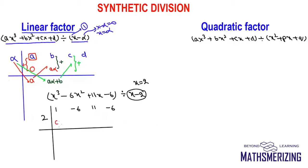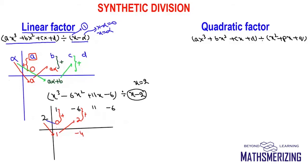Below 1 I will write 0, then add them: 1 + 0 = 1. I multiply 1 with 2 and put the result there, which is 2. Now I add them: −6 + 2 = −4, and now I multiply 2 with −4.